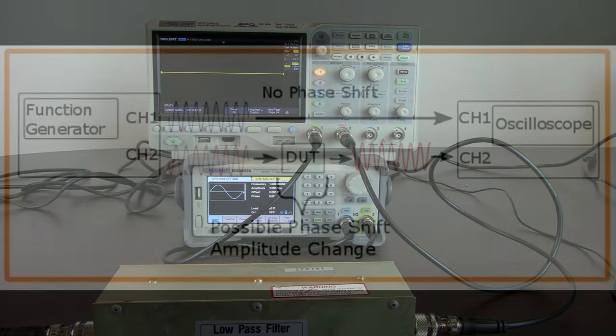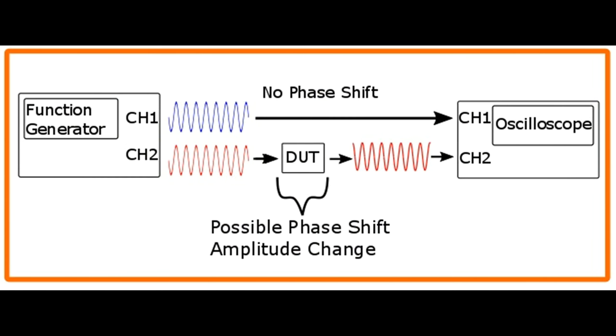So go back to the diagram that we originally had shown. We want to have the source channel look identical to our channel going through the device under test at the beginning, but once it passes through the device under test then we'll be measuring it with the scope and we can see what the effects are.